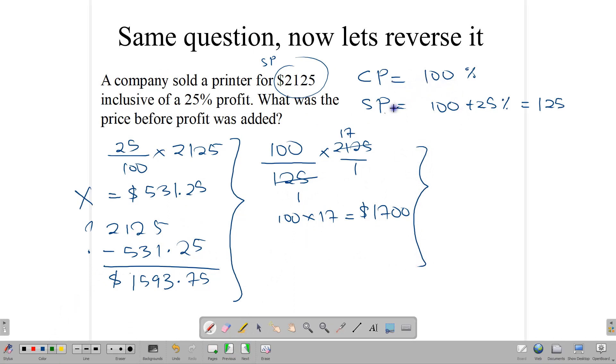The cost price is 100%. The selling price, in this case, would be 100% plus 25%. So this $2,125 is actually equal to 125%. So the next logical question is, what is 1%? And to get 1%, we do a division. So $2,125 divided by 125 is equal to 17. So $17 is equal to 1%. And since the cost price is 100%, then we simply multiply 100 by 17, and we get our $1,700.